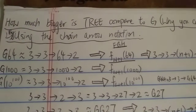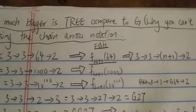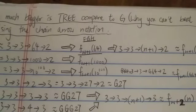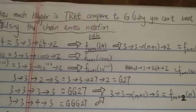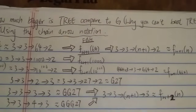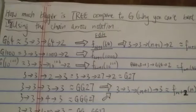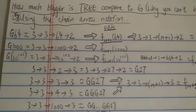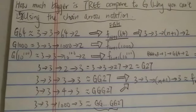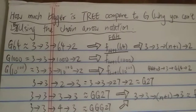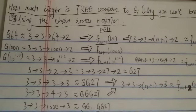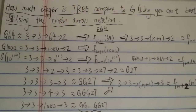Hi everyone. Today I'm going to try to tell you how much bigger Tree(3) is compared to G64 exactly, and why you cannot beat Tree(3) using G. I know I've already made several videos comparing Tree(3) to G, but still there are many many people asking how much bigger Tree(3) is compared to G and why you cannot beat Tree(3) with G. They continue to try to beat Tree(3) using G no matter how many times I reply to comments. So this is probably my final attempt to persuade you — by the end of the video most people would be mind blown by how much bigger Tree(3) is compared to G.